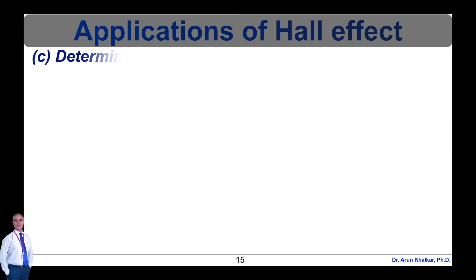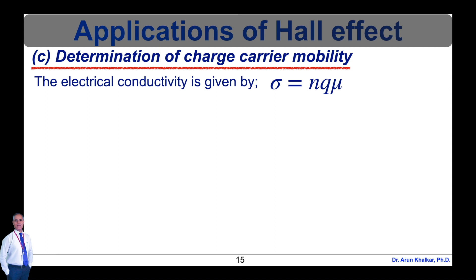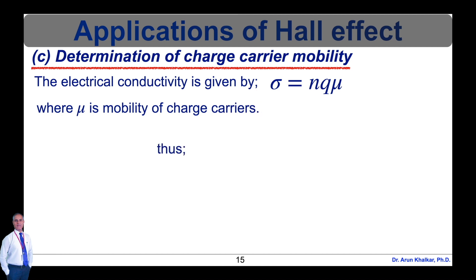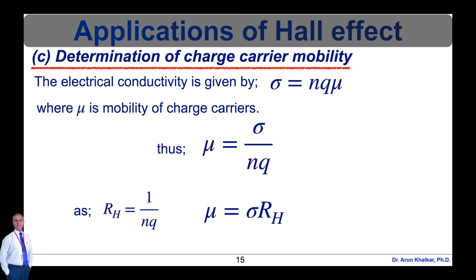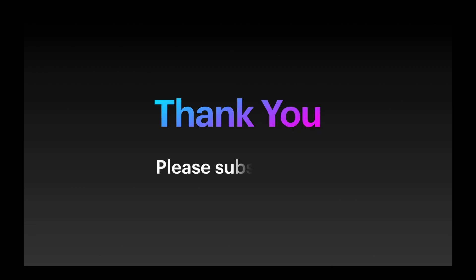Now let's see the determination of charge carrier mobility. The electrical conductivity is given by σ = n·q·μ, where μ is the mobility of charge carriers. Therefore μ = σ / (n·q). Since R_H = 1 / (n·q), we can write μ = σ·R_H. Thus the charge carrier mobility can be determined using the Hall coefficient with this equation.